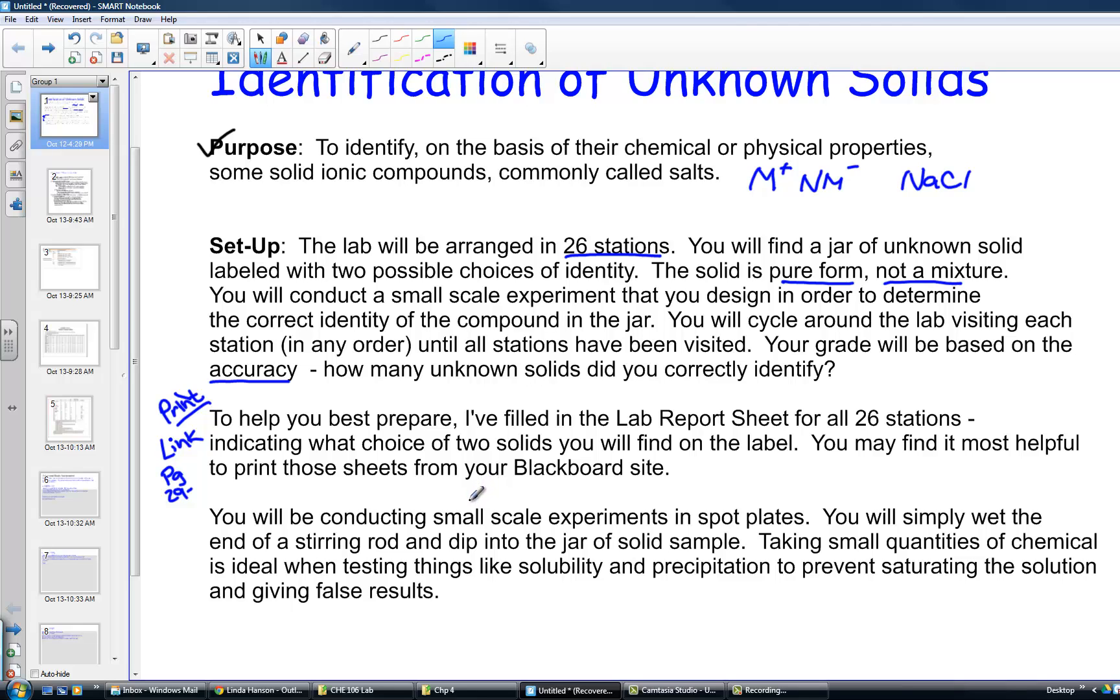You'll be conducting a small scale experiment using spot plates or reaction wells. You're simply going to wet the end of a stirring rod and dip it inside the jar of the solid sample. A moistened stirring rod will allow a tiny bit of the sample to adhere, and you'll put it into a little bit of water inside of a reaction well. You'll carry one spot plate with you as you move from station to station.